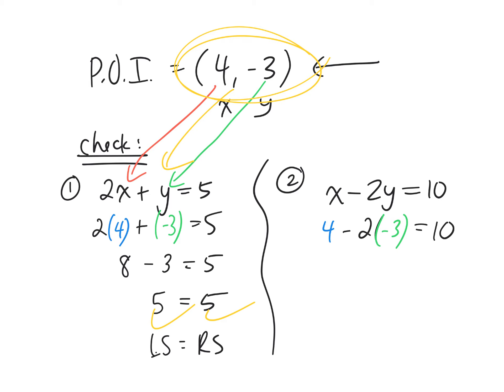What about for the second equation? 4, negative 2 times negative 3 is... what's 4 plus 6? So 10 equals 10. So yes, this point is the solution to this linear system. A linear system is just when you have two or more linear equations. This is a linear system.